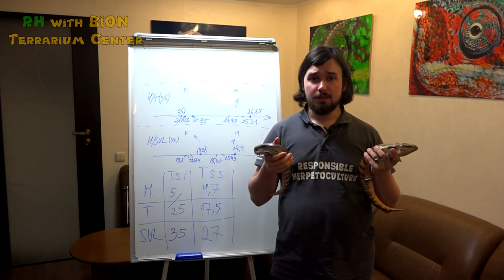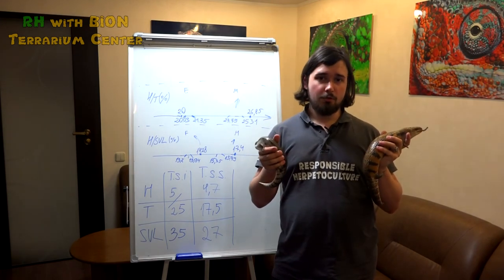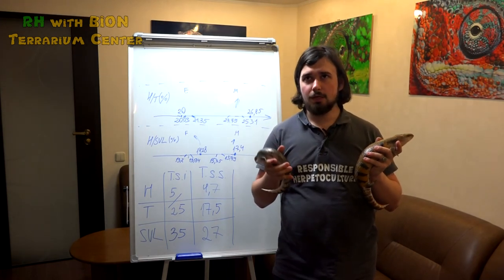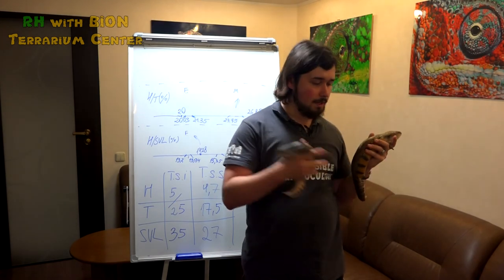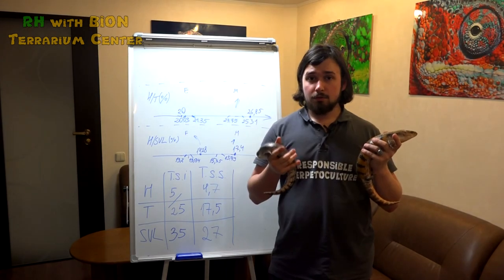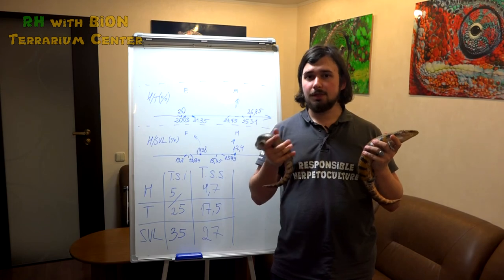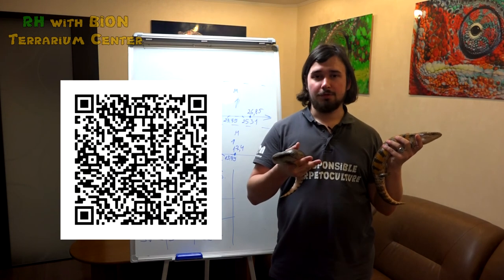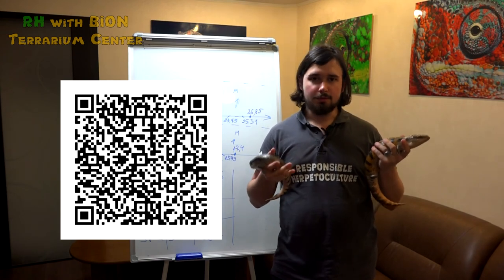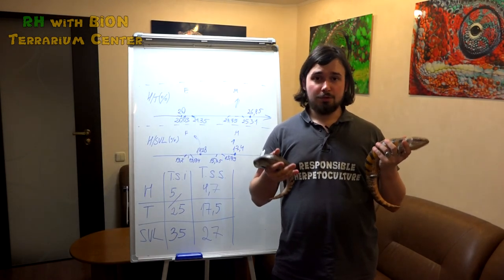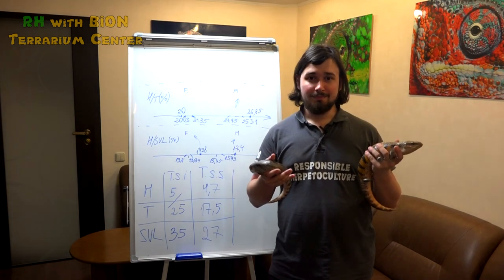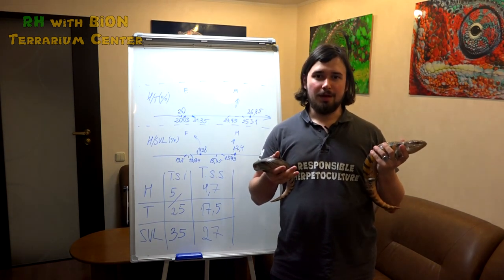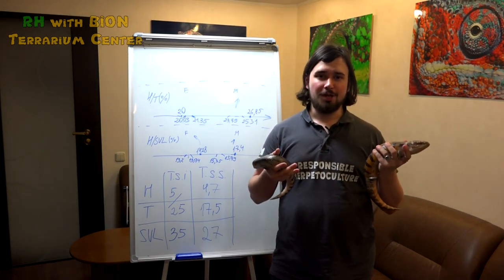By the way, this method is good not only for Tiliqua scincoides but also for Tiliqua nigrolutea and Tiliqua rugosa, it is indicated in the article. And also it is good for sub-adult animals, not only adults. So if you have questions, you can just download the article. We will put the hyperlink to ResearchGate where you can download it and try to do it on your own. I hope you will succeed. Goodbye. Thank you for following our page and following our YouTube channel.